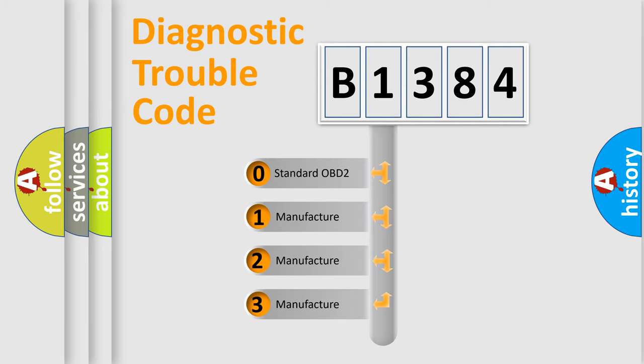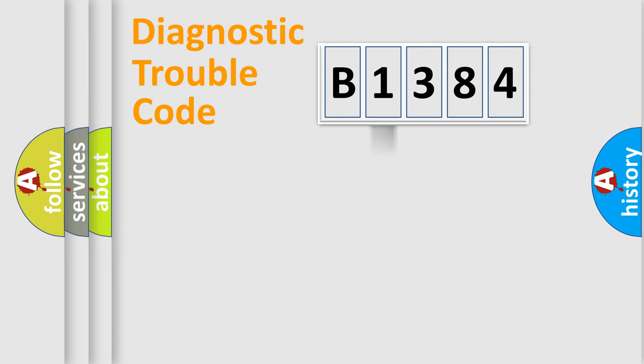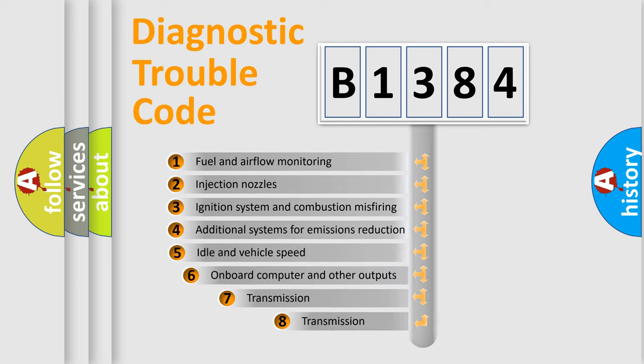If the second character is expressed as zero, it is a standardized error. In the case of numbers 1, 2, 3, it is a more prestigious expression of the car specific error.